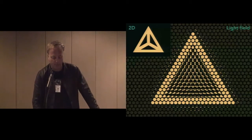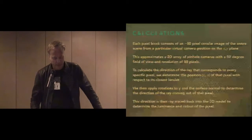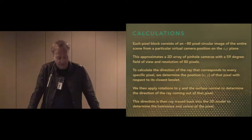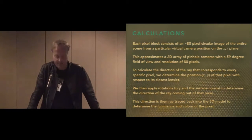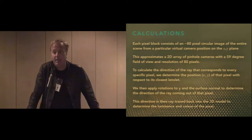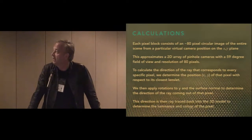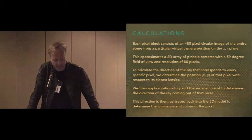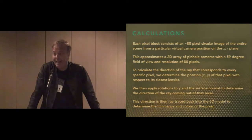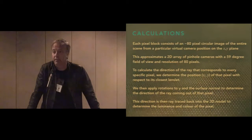We set out to build a portable light field using these microlenses. Because a lot of our work deals with flexible displays, we decided to make it flexible as well. To calculate the direction of the ray corresponding to every specific pixel, we determine first the position XY of the pixel with respect to the closest lenslet. We then apply rotations to the Y and the surface normal to determine the direction of the ray going back into the scene, which is what we do with the reverse ray tracing algorithm. That's how we determine the luminance and color of each pixel.